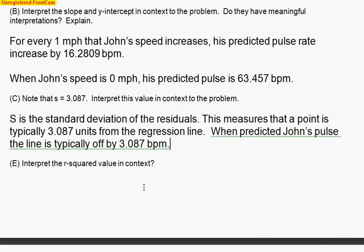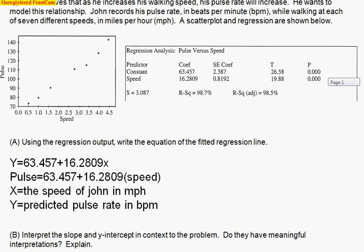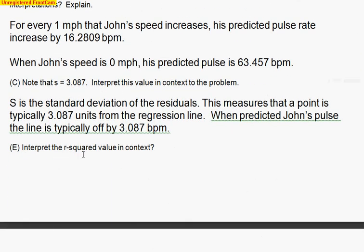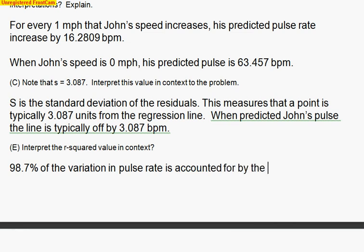Lastly, let's go ahead and interpret the R-squared value in context. Remember, R-squared is the percentage of variation in the Y. So I'm going to go back up here. R-squared is 98.7%, so 98.7 - never use that R-squared ADJ, by the way. R-squared, never use that. 98.7% of the variation in the Y, that's John's pulse rate - 98.7% of the variation in pulse rate is accounted for by the variation in his speed. So 98.7% of the variation in the Y pulse rate is accounted for by the variation in the X speed.